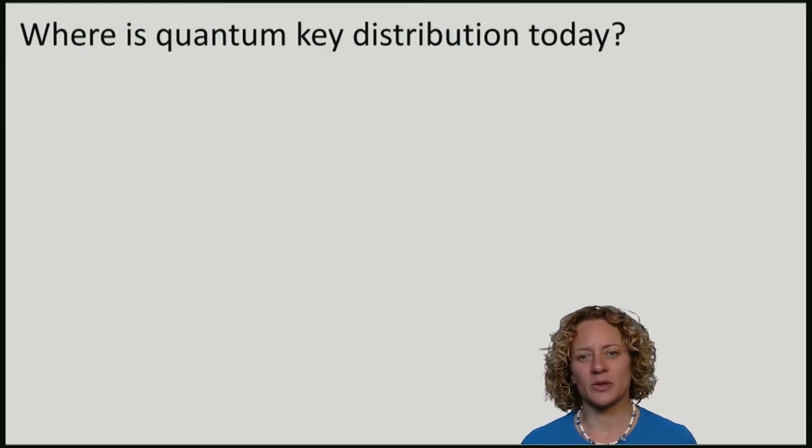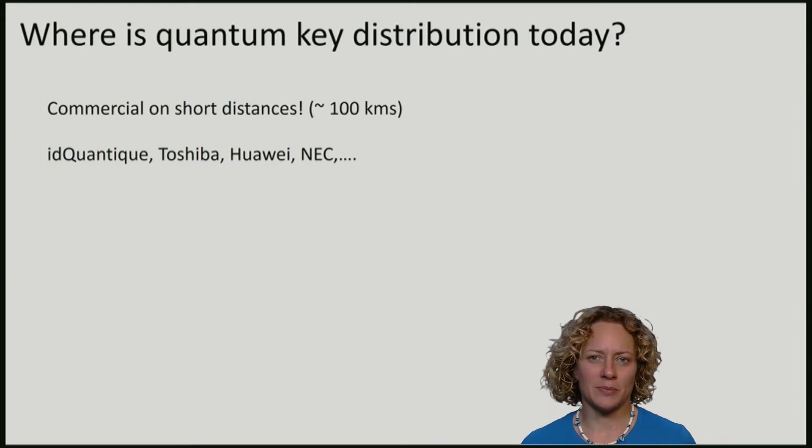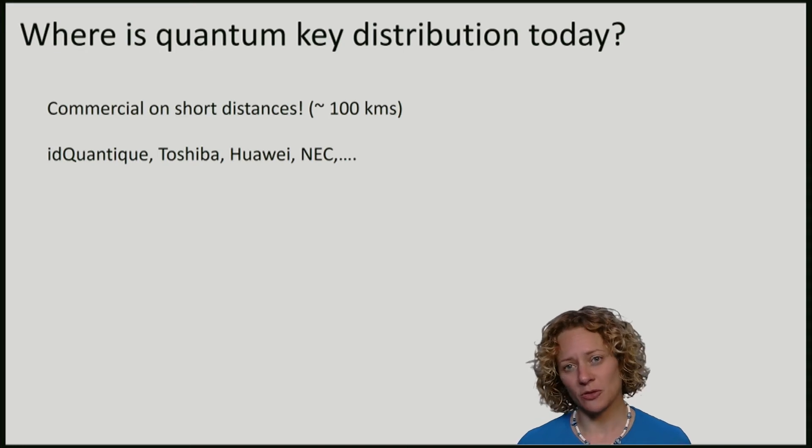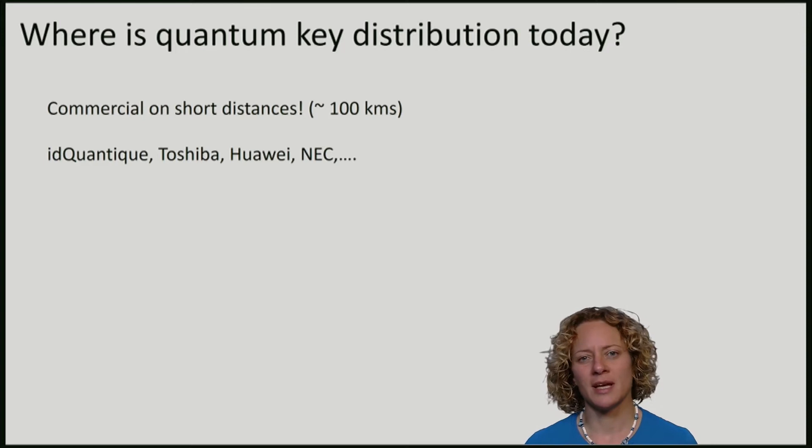Where is quantum key distribution today? Quantum key distribution is in fact commercially implemented on short distances. There are quite a lot of companies that do that: ID Quantique, Toshiba, Huawei and NEC. I will not talk about this here, since we will have a special guest lecture for you by Nicolas Gisin from Geneva, who will tell you more about their efforts to realize quantum key distribution commercially.